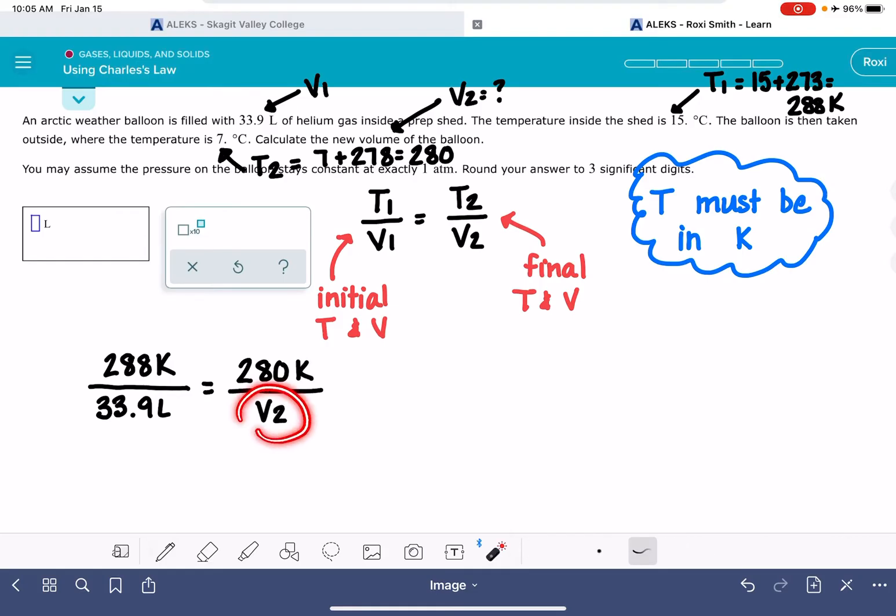So our unknown is down here in the denominator, which makes it a little bit tricky to solve. But we can use this mathematical relationship. The numerator of one side times the denominator of the other is equal to the opposite.